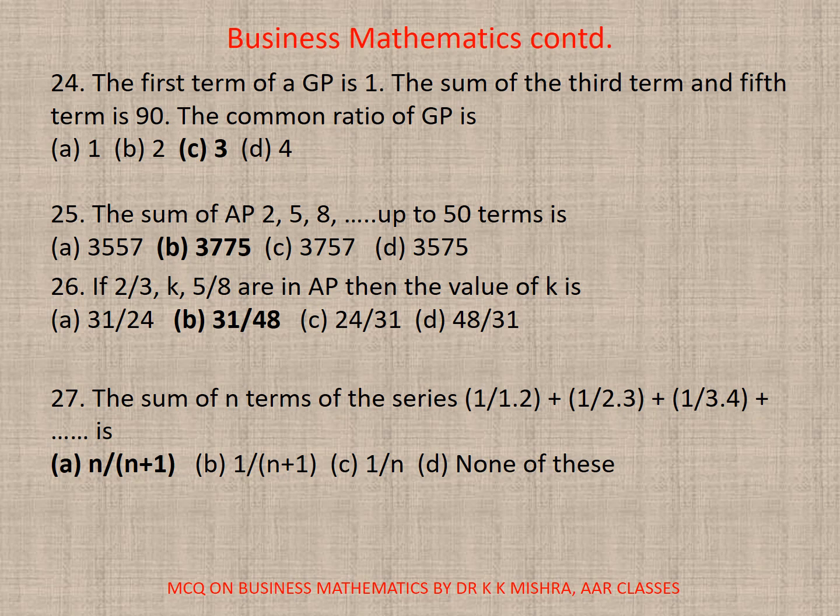Question 25. The sum of AP 2, 5, 8 up to 50 terms. If you calculate, SN is equal to N/2 times (2A + (N-1)D). With this formula, you will find it to be 3775. So correct option is B. Question 26. If 2/3, K, 5/8 are in AP, then the value of K is, correct option is B, 31/48.